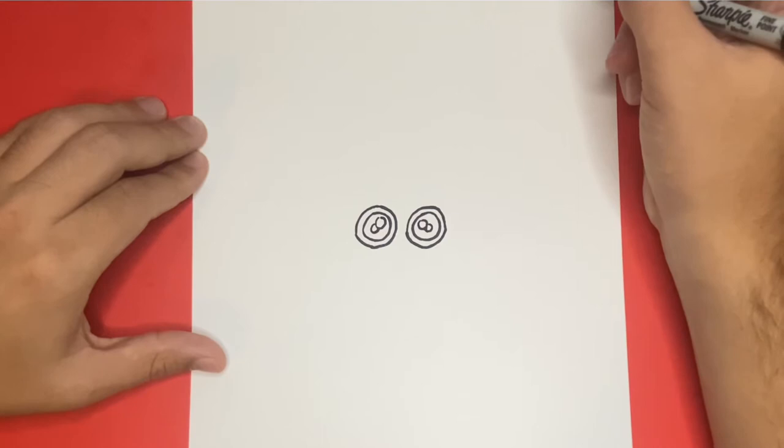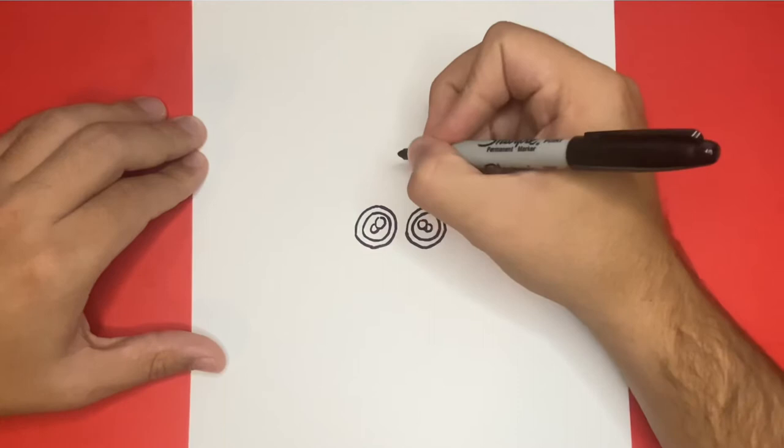For the next step, we're going to draw the outline of the face, beginning with the top of the head, and then moving down below. Let's begin by drawing a small upside-down U-shape right above and in between the two eyes.